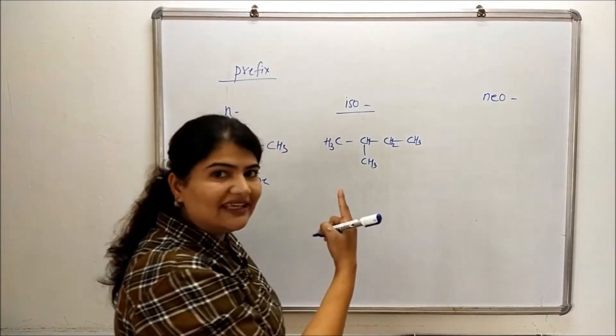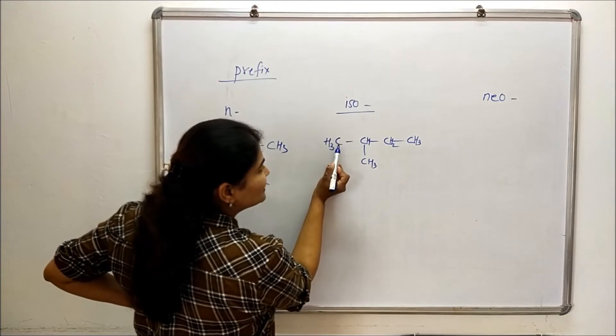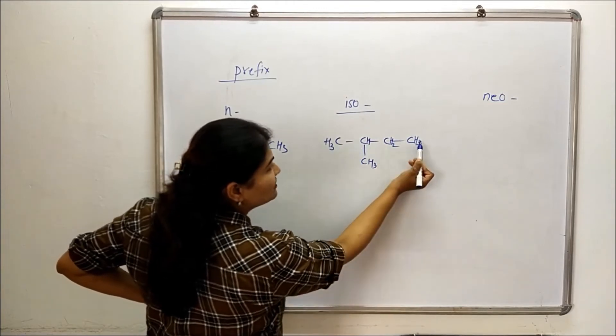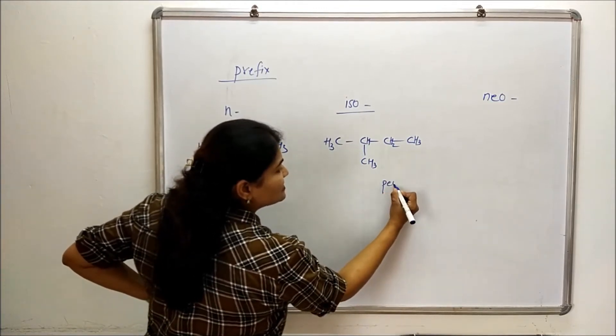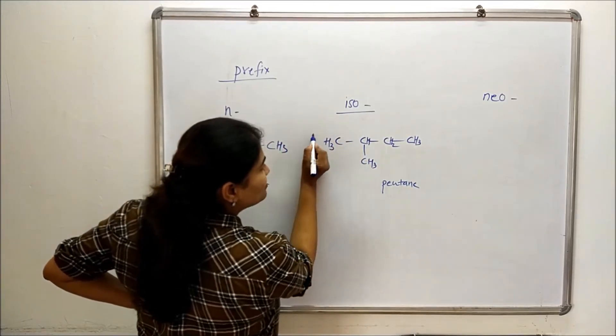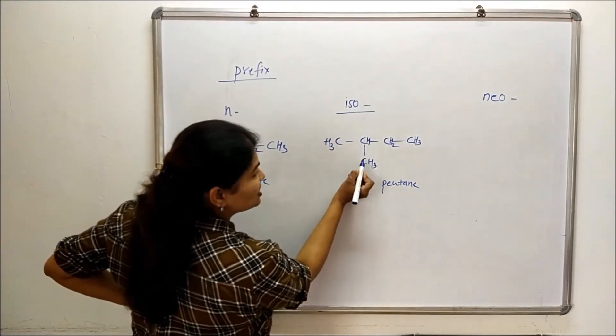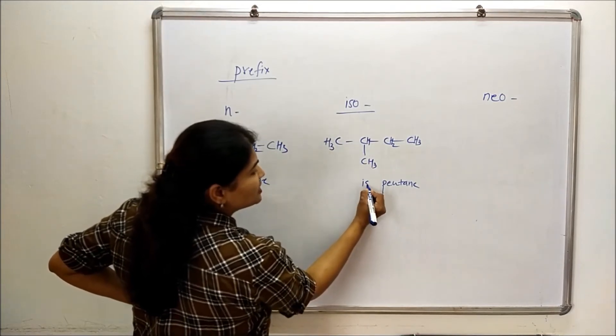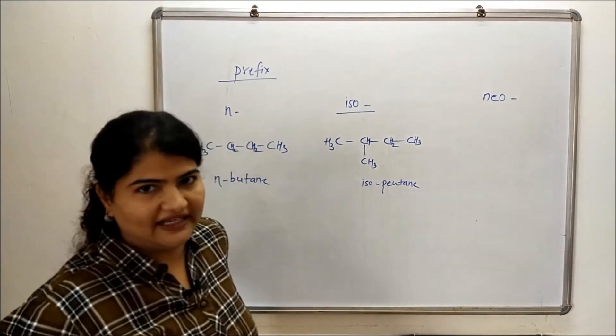If we have to name this particular compound, just count the number of carbons 1, 2, 3, 4, 5. So pentane is going to be my parent and I will be putting iso because of this structure where second last carbon bears one methyl group. So I will write isopentane.